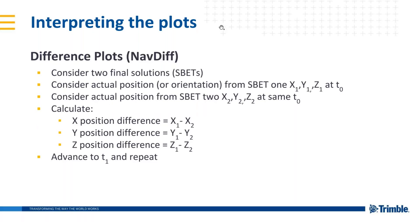The second plot is the difference plot, called NavDiff in PostPac. We take two final solutions — SBETs — and compare the actual position or orientation from SBET number one at a certain point in time with that from SBET number two at the same point in time, then simply calculate the position difference in X, Y, Z and so on for all points in time. We end up with a graph showing the difference on the Y-axis and time on the X-axis.